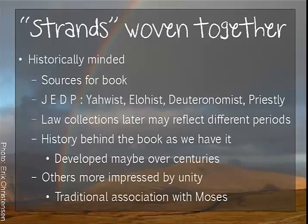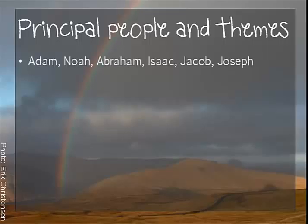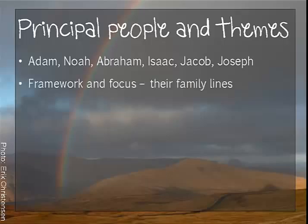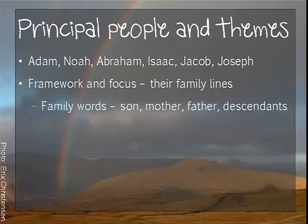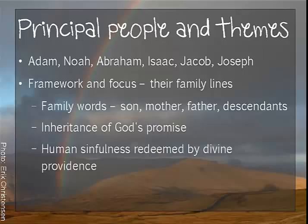About such questions there isn't — and probably there won't be — proof; you'll have to make up your own minds. Genesis focuses on six principal people: Adam, Noah, Abraham, Isaac, Jacob, and Joseph. The story is presented in a framework with a focus on their family lines — family words like son, father, and descendants are particularly frequent in this book. The inheritance of God's promise in Genesis is a thread that ties sections and stories together. Another theme — human sinfulness redeemed by divine forbearance and providence — also serves to unite the book.